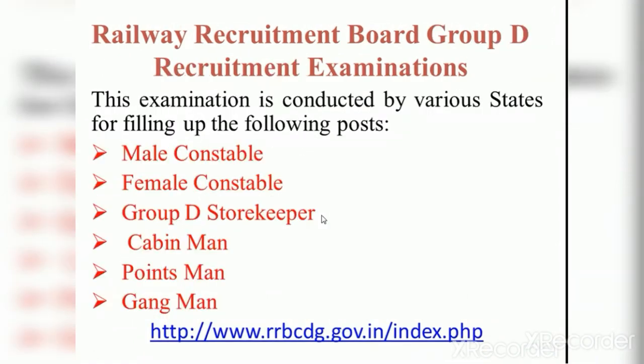The next part covers the Railway Recruitment Board Group D Recruitment Examination. Postings under Group D include Male Constable, Female Constable, Storekeeper, Cabin Man, Points Man, and Gang Man. Click on the link in the description for eligibility criteria and to apply.